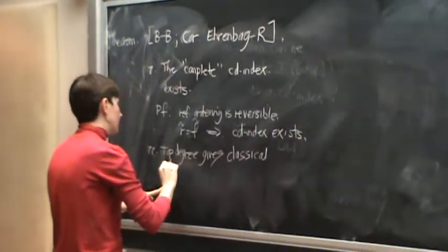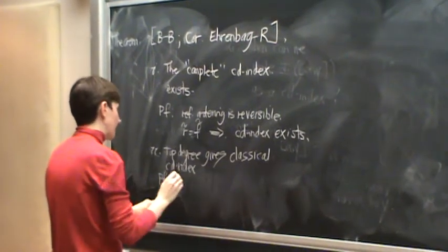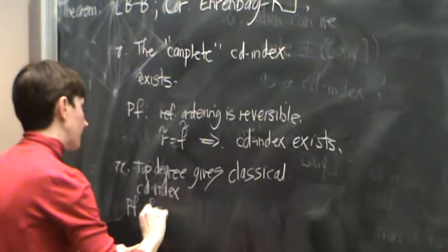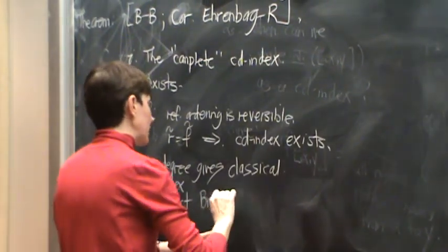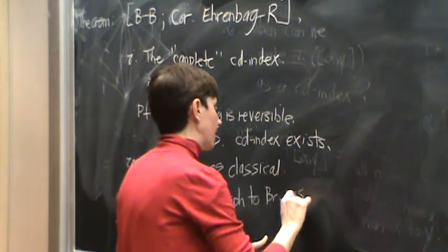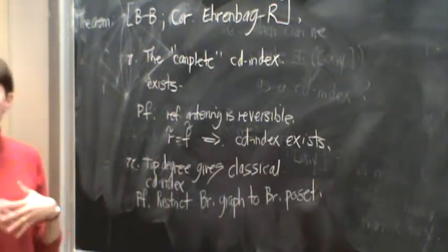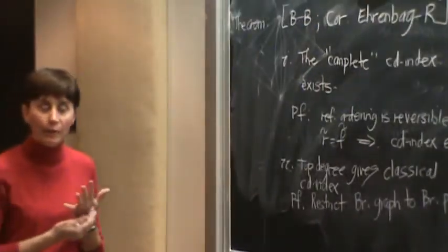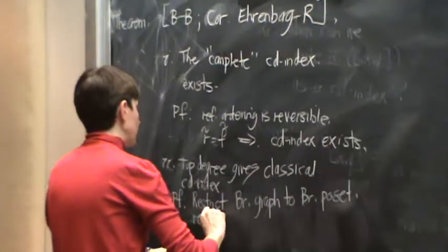And again, the proof of this is that restricting, you restrict your Bruhat poset, Bruhat graph, sorry, to Bruhat poset. And so in other words, you get rid of the shortcuts, and then your labeling that you have is now an R labeling. The reflection ordering is an R labeling.